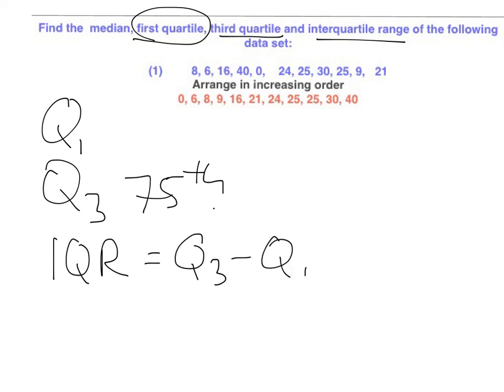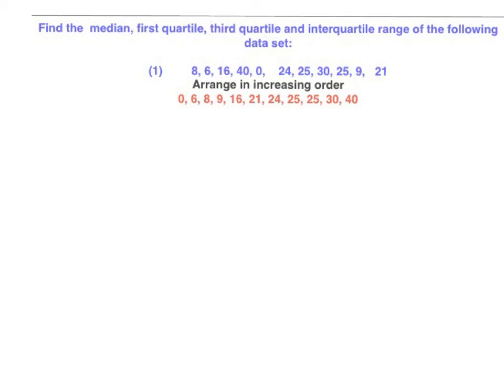We start by rearranging the numbers from small to large. Then in order to find the median, basically the middle number in the distribution, we simply match the last and the first number up together.